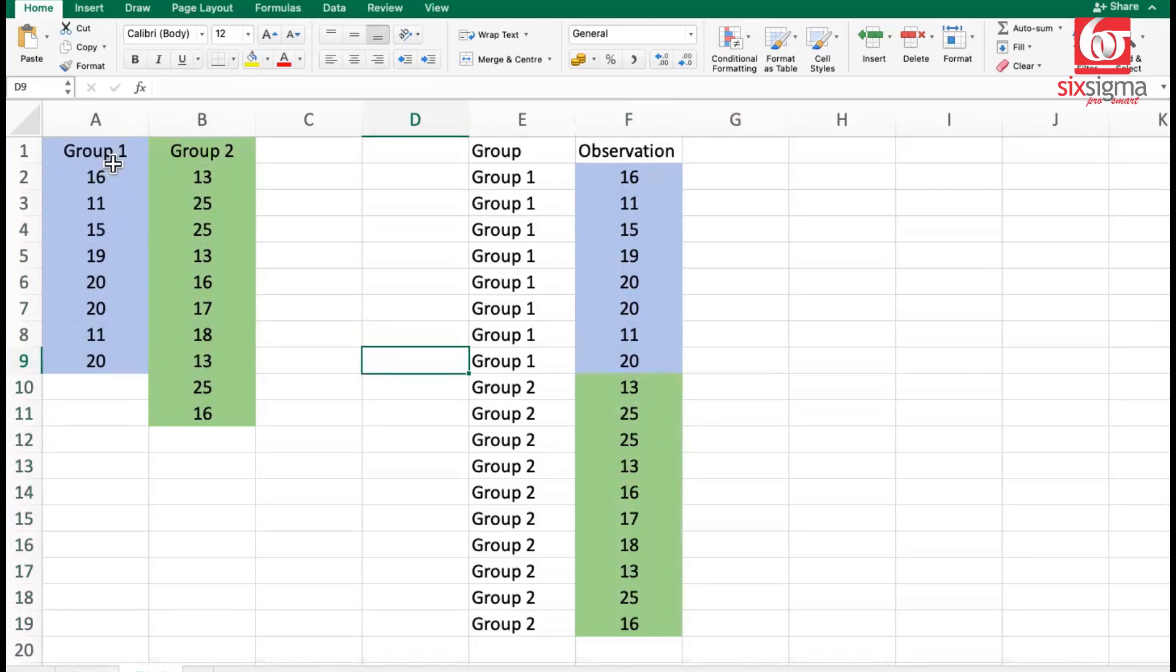Now let's understand the step-by-step process. Step one is to combine the data from both groups into a single dataset. Instead of looking at the data in two separate columns, we combine the data by stacking one on top of the other. We have group one here with these observations, and group two thereafter with its observations.